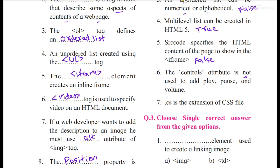This is saying that controls is not used to add this play, pause and all, but it is used to add that, so it is not, so you will write as false. .cs is the extension of CSS file. No, it's false. As you know, .css is for CSS, and this is a code-behind file for C# files, that is .NET technology. So it is false.